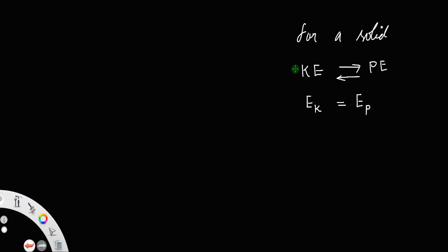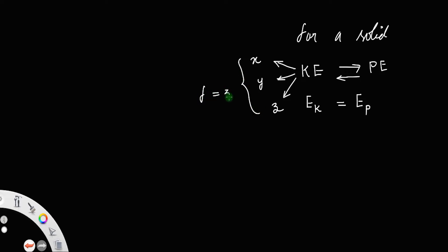The molecule can vibrate in the x direction, y direction, and also in the z direction. So this has 3 degrees of freedom, f equal to 3. Similarly, the potential energy also has 3 degrees of freedom.